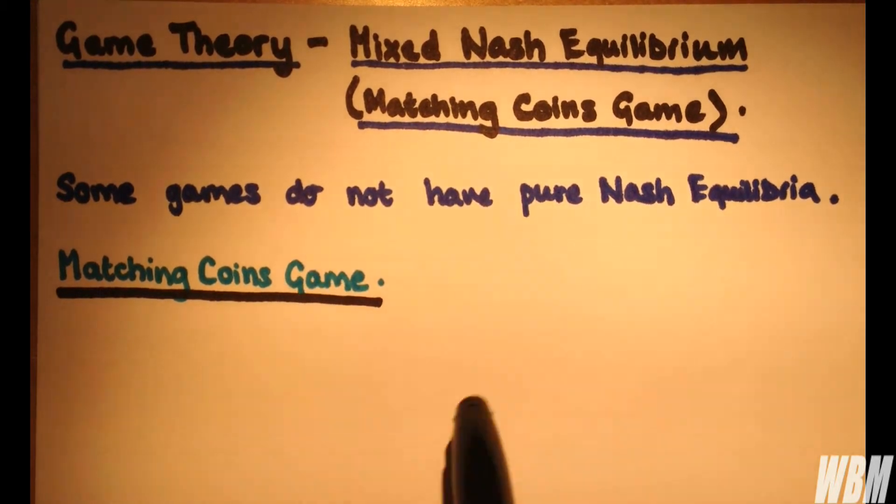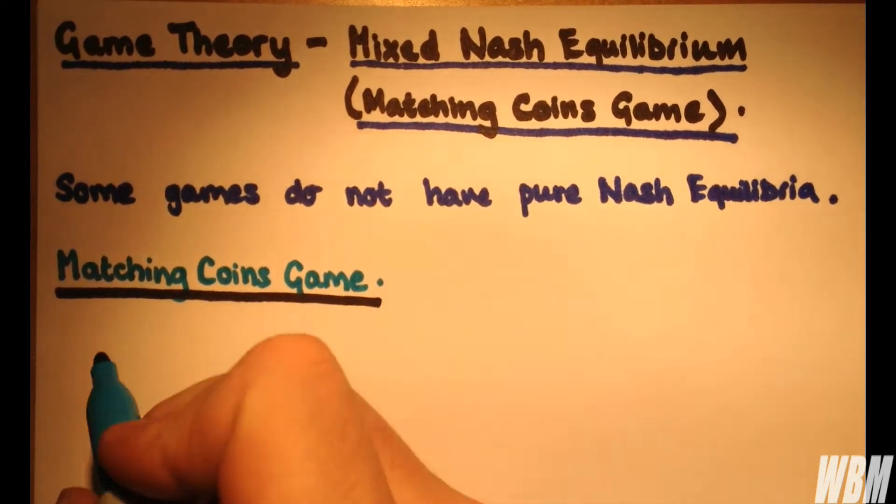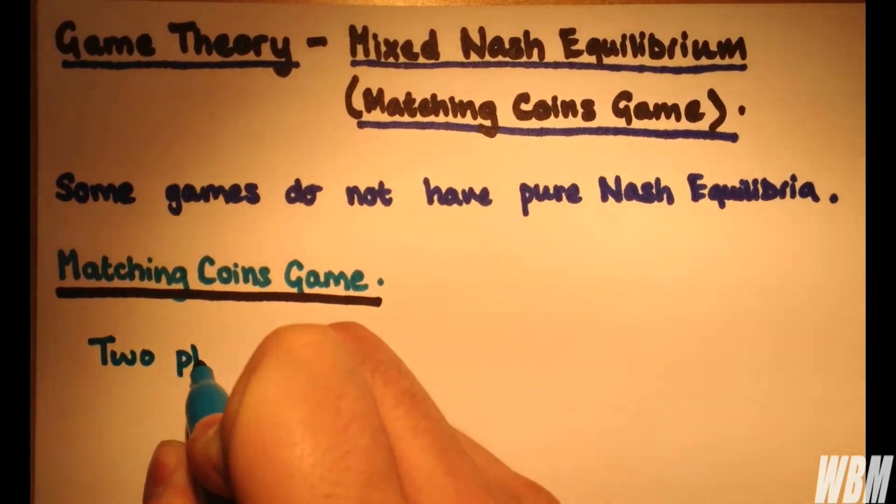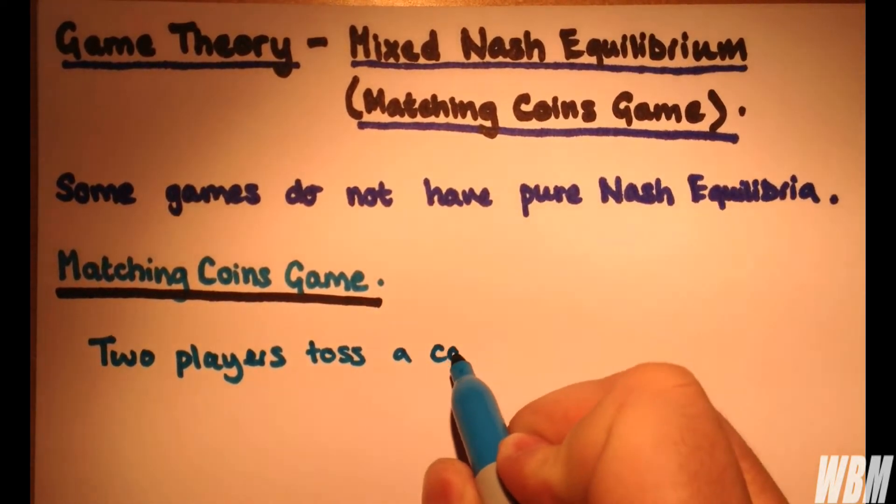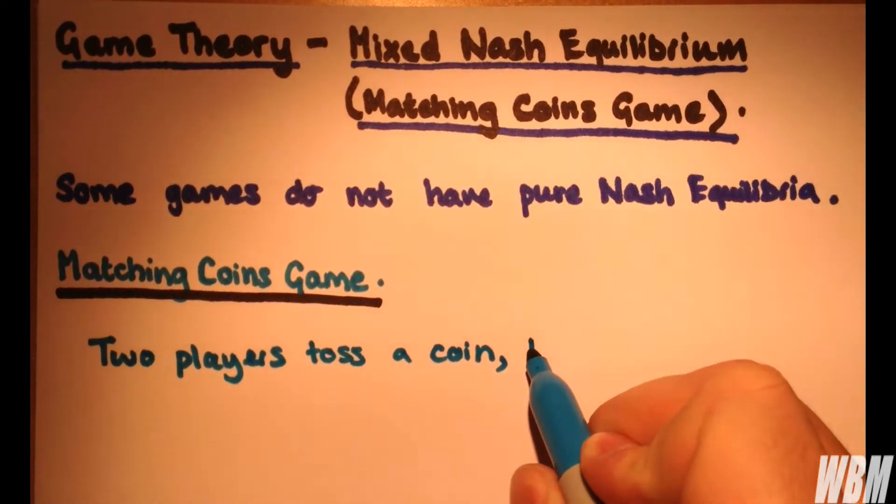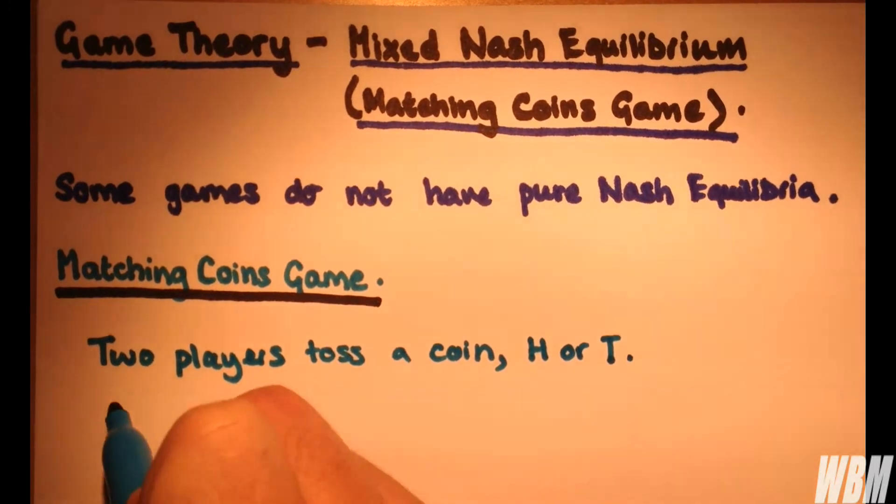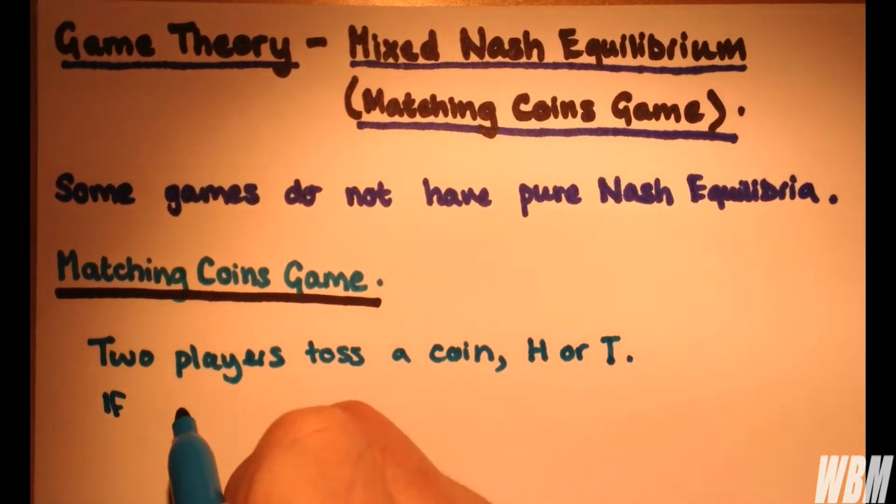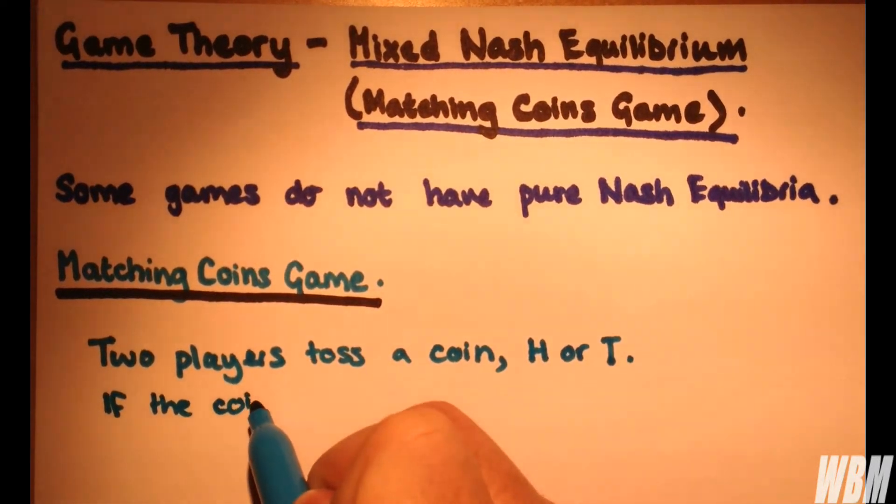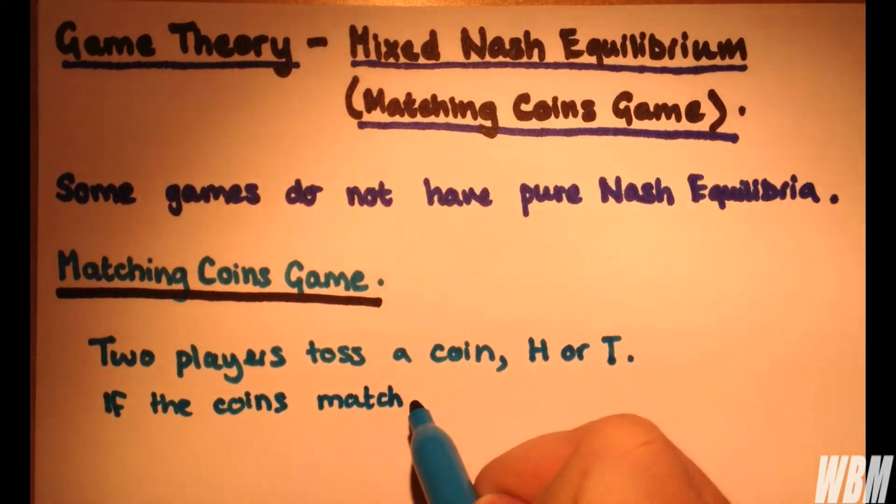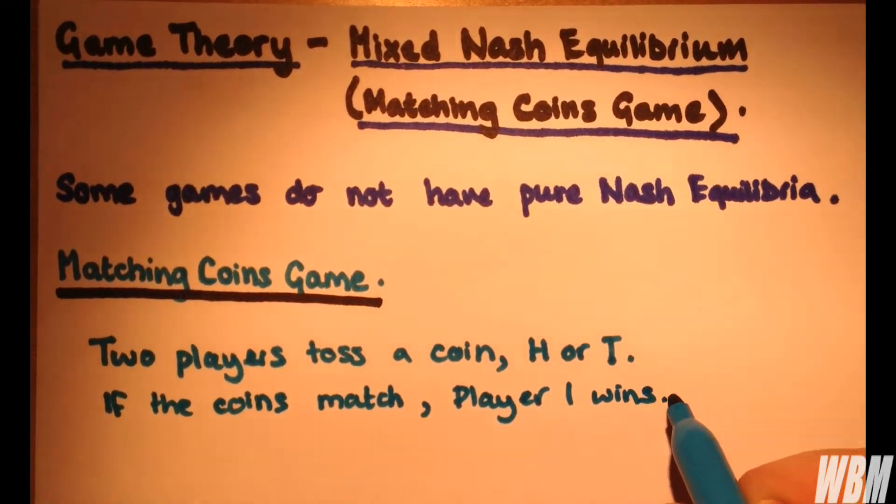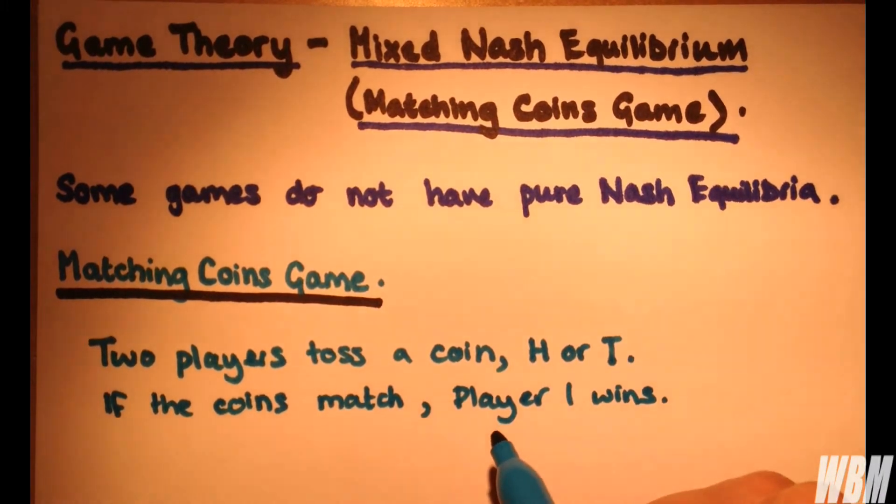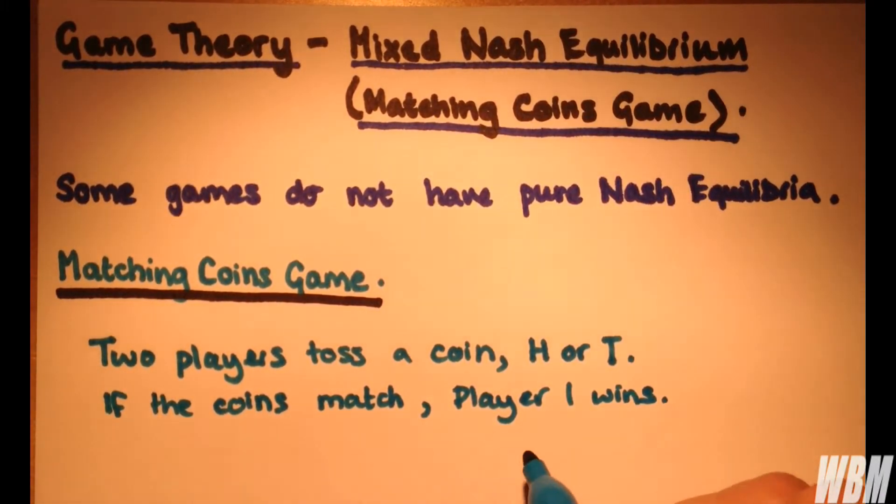The best way to understand this is by doing a quick example. The Matching Coins game is that two players toss a coin, and it can be either heads or tails. If the two coins match, so if we have two heads or two tails, player one wins. What he wins doesn't actually matter. All that matters is that he wins.